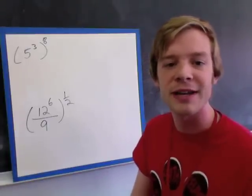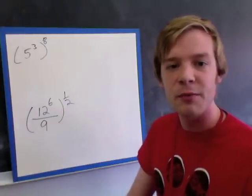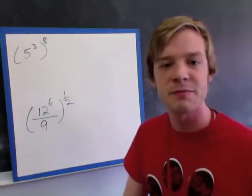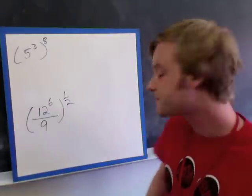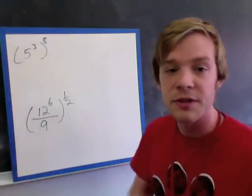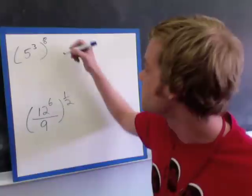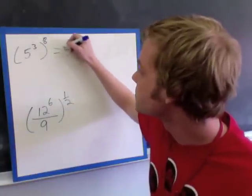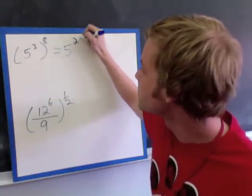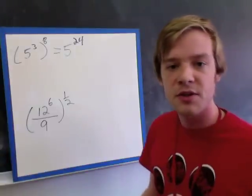So I'm only bringing my power of 8 into one thing, and I want to multiply my power of 3 times by my power of 8. So when I do this, I'm going to get 5 to the power of 24. And that's all there is to it.